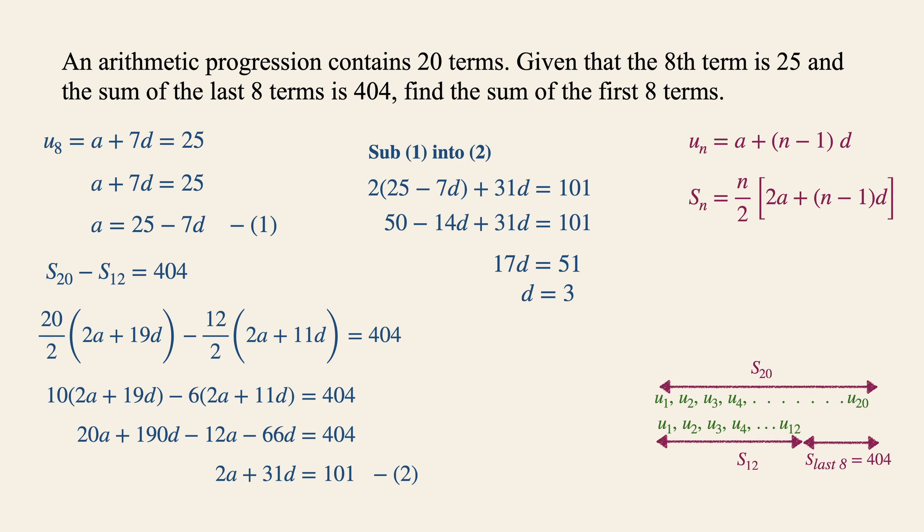Now all we need to do is to substitute 3 into equation number 1 and A is equals to 25 minus 21 which is equals to 4. Now many students make a common mistake of just stopping over here but let's try to always answer to the question which is to find the sum of the first 8 terms. Now this will be denoted by S8 which is equals to 8 over 2 2 times 4 plus 7 times 3 and this will give us 4 8 plus 21 and our final value will be 116.